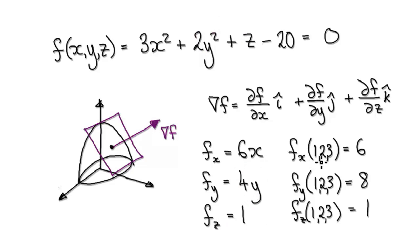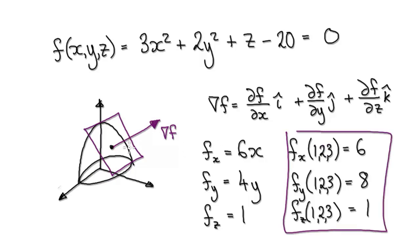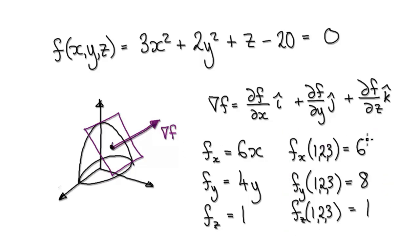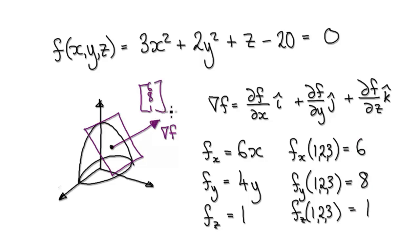We now need to evaluate it at our point. The point in question is 1 in x, 2 in y, and 3 in z — so the point is (1, 2, 3). That will then give us our gradient vector of (6, 8, 1).